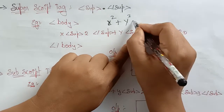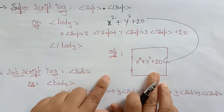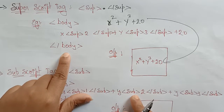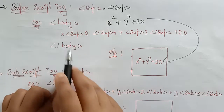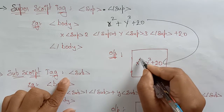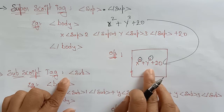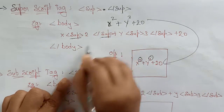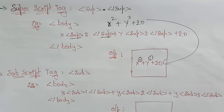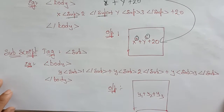So the output printed on the page is x² + y³ + 20. That is the use of the superscript tag — whatever powers you want to represent in mathematical form, you use the superscript tag. It will display like x power 2, y power 3, and so on.